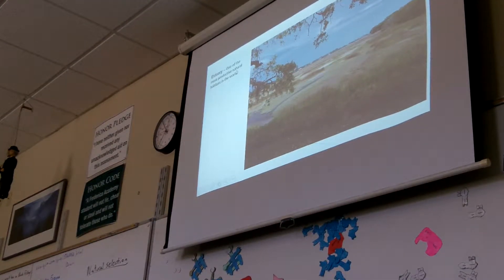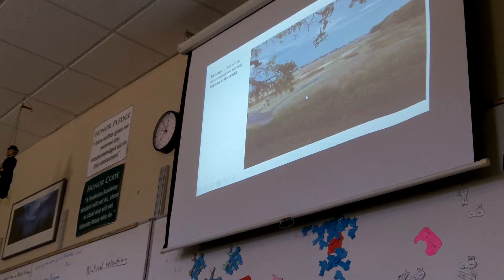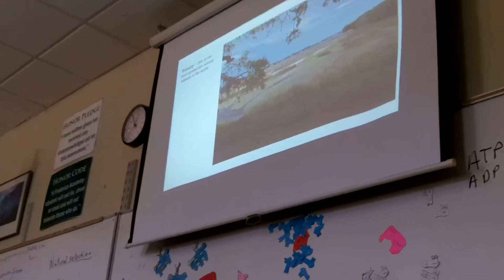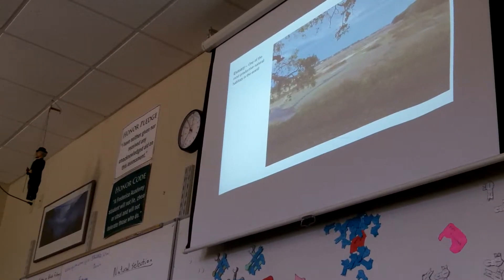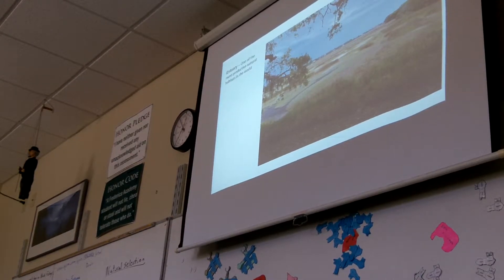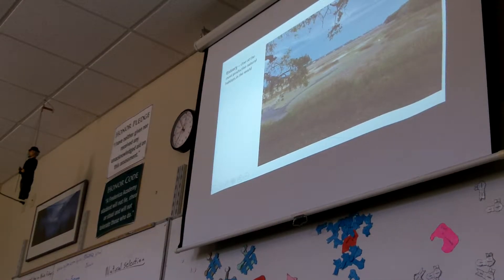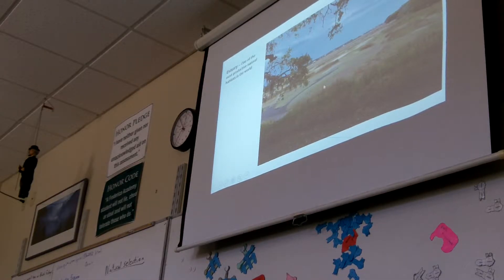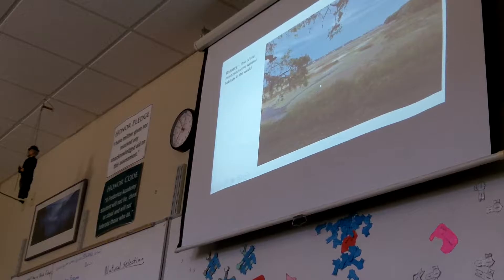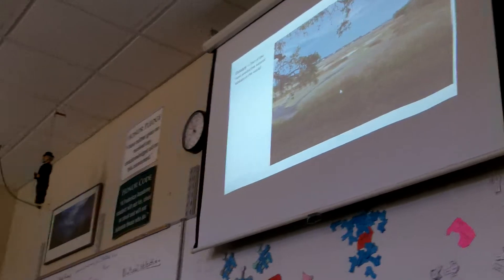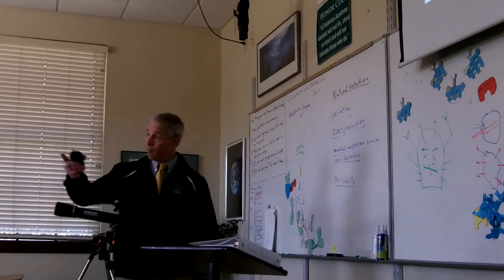An estuary is an area that has some salt water and some fresh water. The marshes are estuaries because when it rains, the fresh water comes off of the land and into the marshes. And when it's high tide, the salt water comes up from the oceans and into the marshes. So you have a mixing of fresh water and salt water, brackish. We call it brackish water.